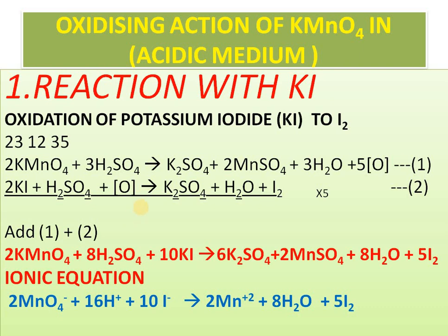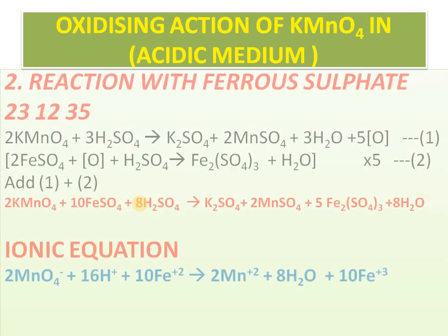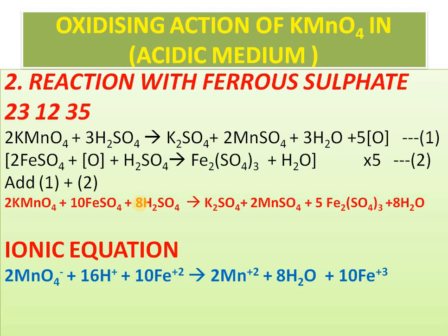The next equation is ferrous sulfate — same method. Remember 23-12-35 and write the equation. FeSO4 + O gives FeSO4 + H2SO4 → ferric sulfate. Ferrous Fe2+ changes to ferric Fe3+ — oxidation number increases from +2 to +3 — oxidation of ferrous. There is 1 oxygen on one side and 5 on the other, so multiply the whole equation by 5 and add. Then check: 2K, 2K here; 2Mn here and 2Mn there; sulfates sum to 18 on both sides. Please check after writing.